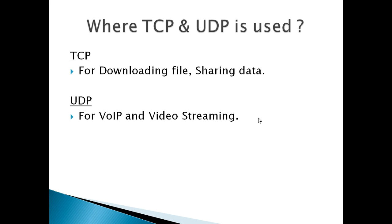With UDP, you don't need to acknowledge every packet. In a voice or video conversation, if some data is lost, the conversation may have some issues but continues. TCP, on the other hand, requires acknowledgment for every packet. TCP is used for reliable file sharing and large file downloads.